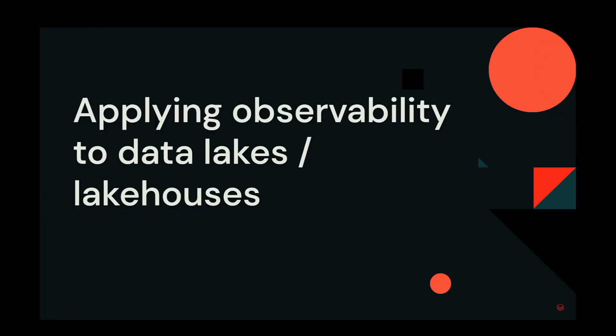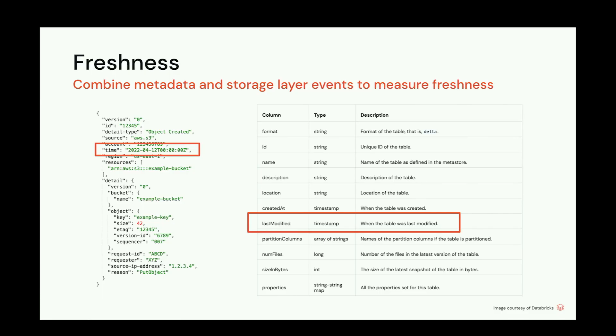Now I'll hand it over to Prisik to talk about observability in the lake house. We're going to talk specifically about observability for the data lake or lake house. Starting with freshness: measuring freshness at scale requires collecting events from both the storage layer and stitching them with metadata about table locations, and you can also use metadata from asset-compliant formats like Delta. Calculating freshness is a combination of data sources.